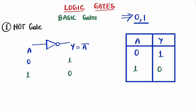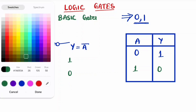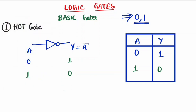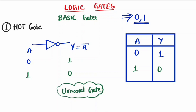These are the three basic gates we have discussed. In the next lecture we will move on to universal gates and exclusive gates. Hope you understood the video — thank you, please subscribe to my channel and like the video, and comment if you have understood. Thanks a lot!